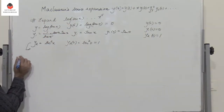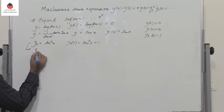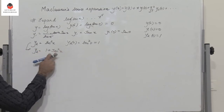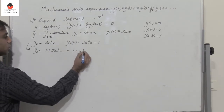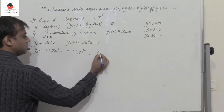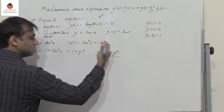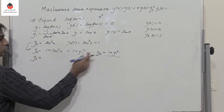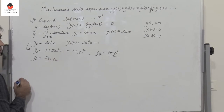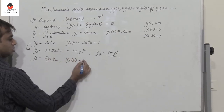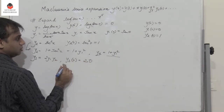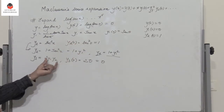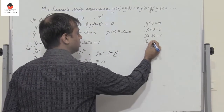To continue more easily, note that y₂ = sec²x = 1 + tan²x = 1 + y₁². So y₂ = 1 + y₁². Differentiating: y₃ = 2·y₁·y₂. Put x = 0: y₃(0) = 2 · y₁(0) · y₂(0) = 2 · 0 = 0.